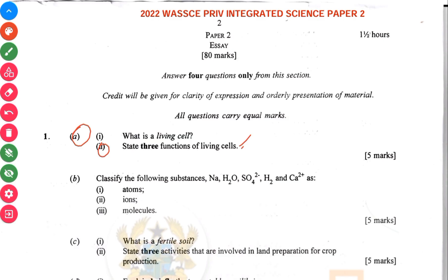Then 1B has to do with classifying these into atoms, ions, and molecules. So this is an atom, this is a molecule, this is a polyatomic ion molecule, and then an ion.